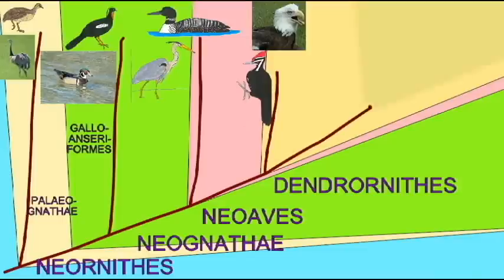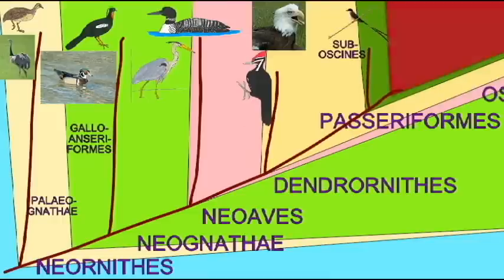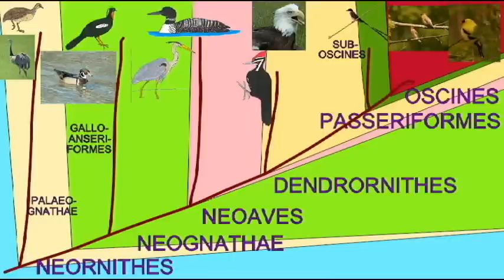There would be the sub-Oscine group, the more primitive branch, which is more common in southern continents, and then finally the Oscine Passeriforms, which include the songbirds that make up the majority of birds today.